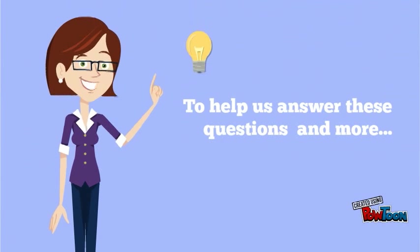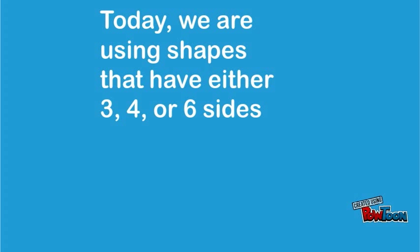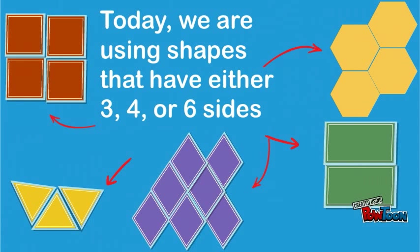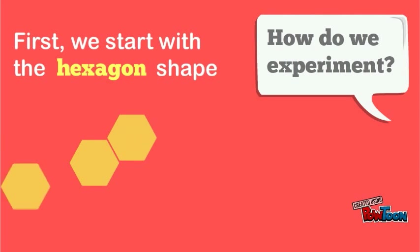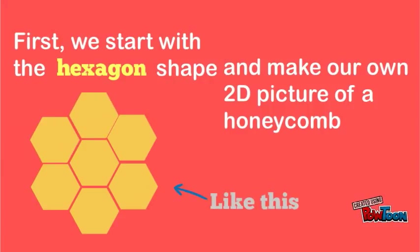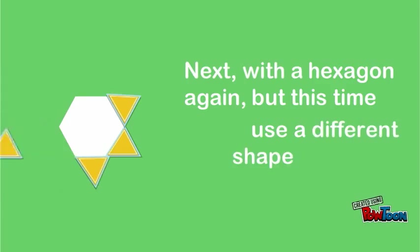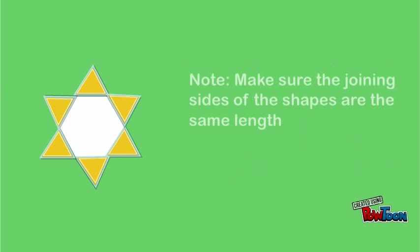To help us answer these questions and more, let's experiment with shapes. Today we are using shapes that have either 3, 4, or 6 sides. First we start with the hexagon shape and make our own 2D picture of a honeycomb like this. Next, with the hexagon again, but this time use a different shape to make a different pattern. Make sure the joining sides of the shapes are the same length.